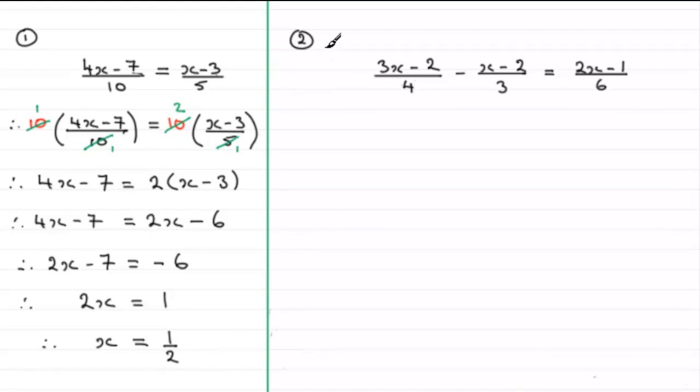Okay now looking at number 2. In this one we've got 3 terms and we've got 3 fractions. So what we need to do is get rid of 4, 3 and 6. So preferably we need to find the lowest common multiple of 4, 3 and 6. Well the lowest number that they all go into is 12. You could choose 24 or 48, but 12 is the lowest common multiple and it would make the solution a lot quicker and easier.